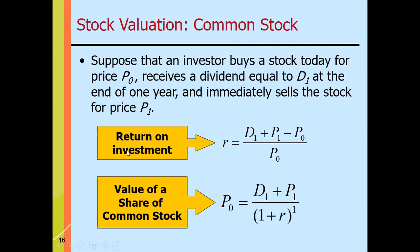How much is the value of a share of common stock? P sub zero, the price or value of the common stock, equals the sum of D sub one (the dividend) plus P sub one (the selling price), divided by the quantity (1 + R) to the power of one — that's for one year.